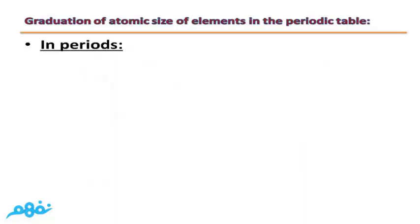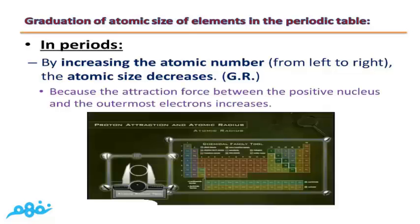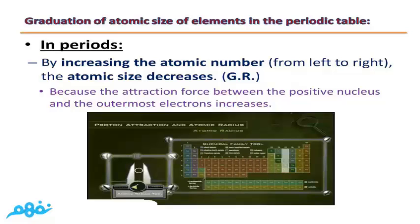Let's talk about the graduation of atomic size of elements in the periodic table. By increasing the atomic number from left to right, the atomic size decreases. This is a give-reason question: why does the atomic size decrease by increasing the atomic number from left to right? Because the attraction force between the positive nucleus and the outermost electrons increases.